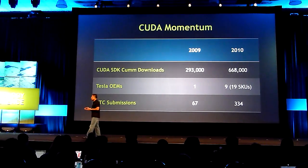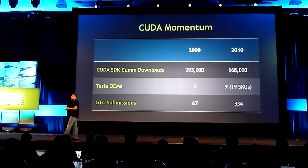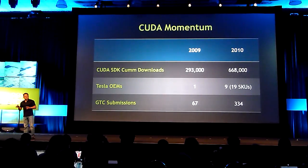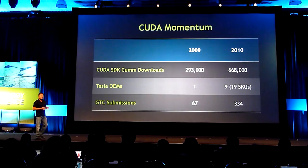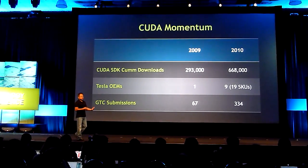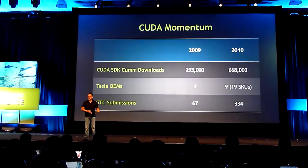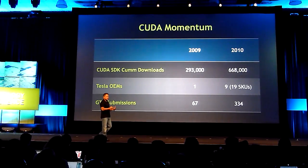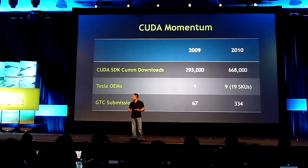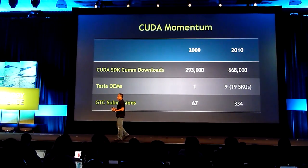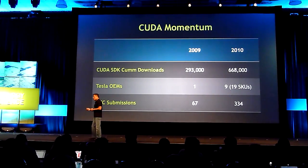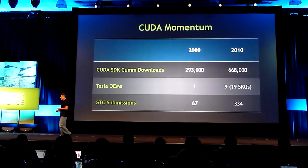In 2009, we had a cumulative 293,000 downloads, and just in one year's time, we've doubled that — now that's 668,000 downloads. There are many situations where a single engineer or researcher would download the SDK several times, and many instances where somebody would download it once and share it with their enterprise network. The number of actual users is hard to say, but the number of downloads is very clear: there are many developers around the world, like you, developing applications and using CUDA for research.